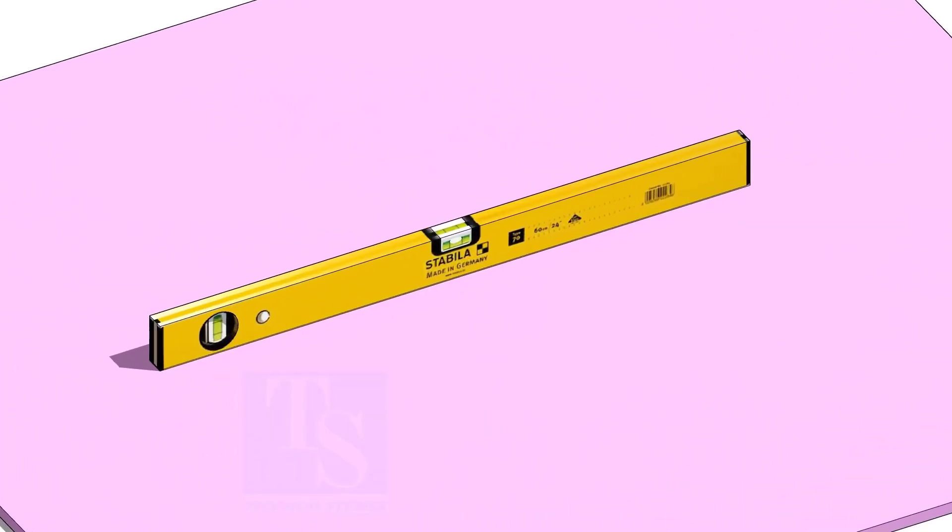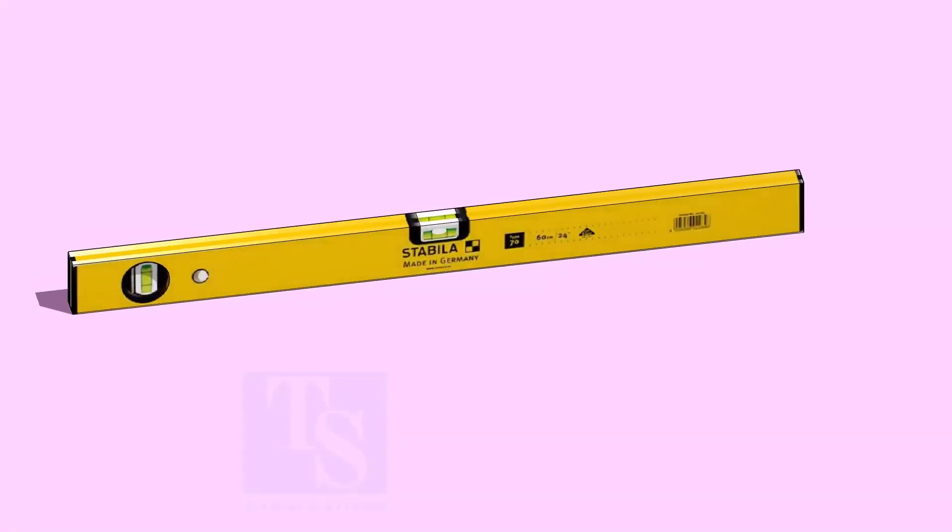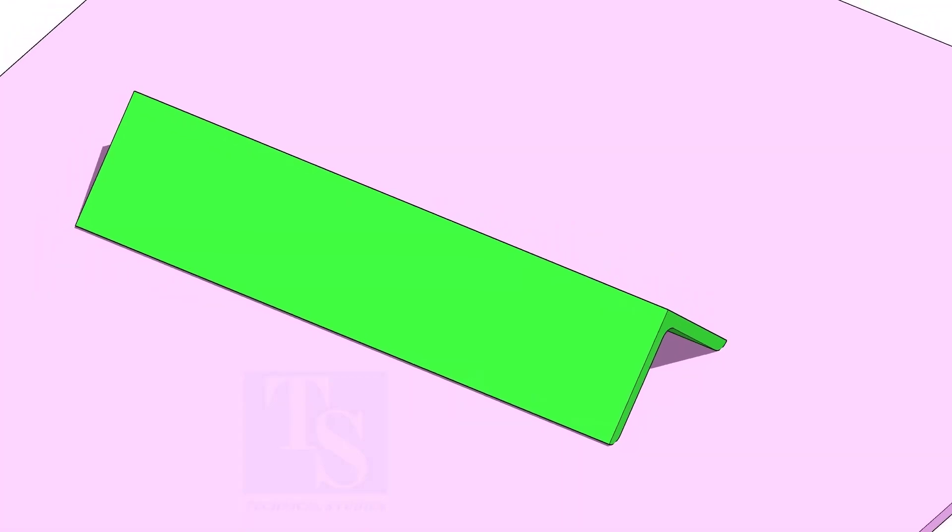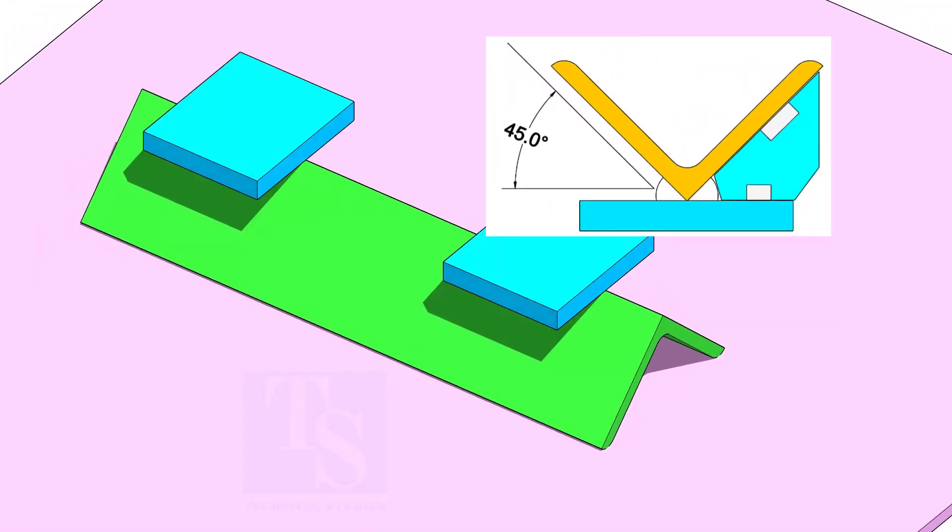Choose a level plate and fit up the angle and the plate as shown. The angle between the angle bar face and the plate shall be 45 degrees.